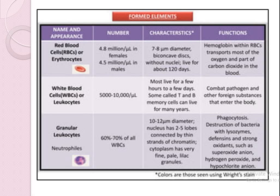Red blood cells are called erythrocytes. The total count of RBCs is 4.8 million per microliter in males and 4.5 million per microliter in females. The size of the RBC is 7 to 8 micrometers in diameter. They are biconcave in shape and are involved in carrying oxygen and carbon dioxide in the blood.